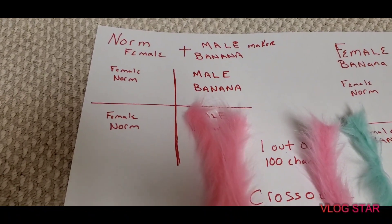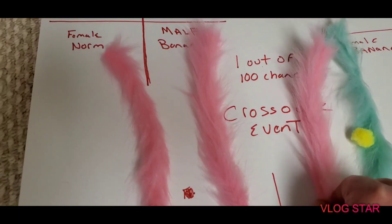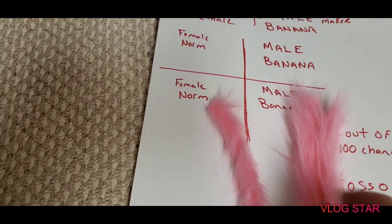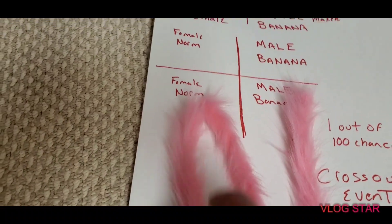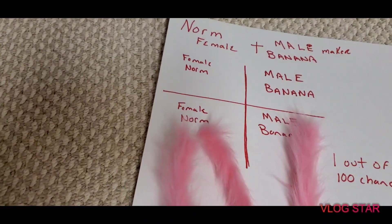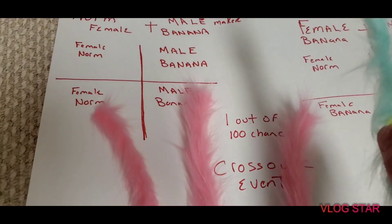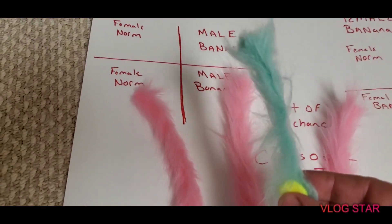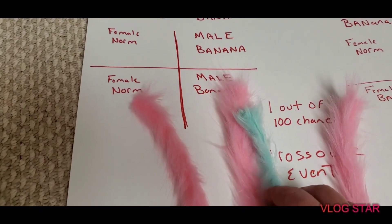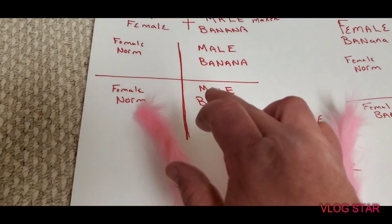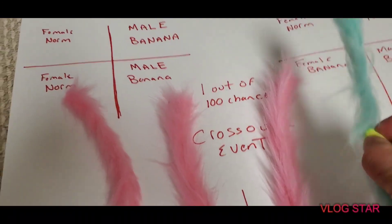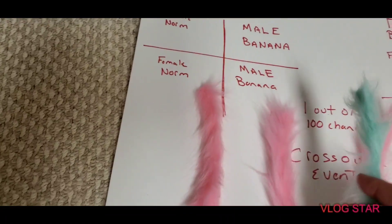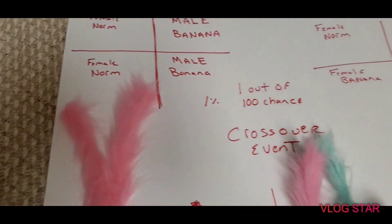Whenever you take that side of the male's DNA strand and match it up with a female, you end up with a female normal. Same thing on the other side — another female normal. But here's where it gets interesting: here comes the male side, and the banana gene is attached. So the banana hitches a ride with the male, and because the male determines sex, you now have a male banana. The same thing happens on the other side — another male banana.